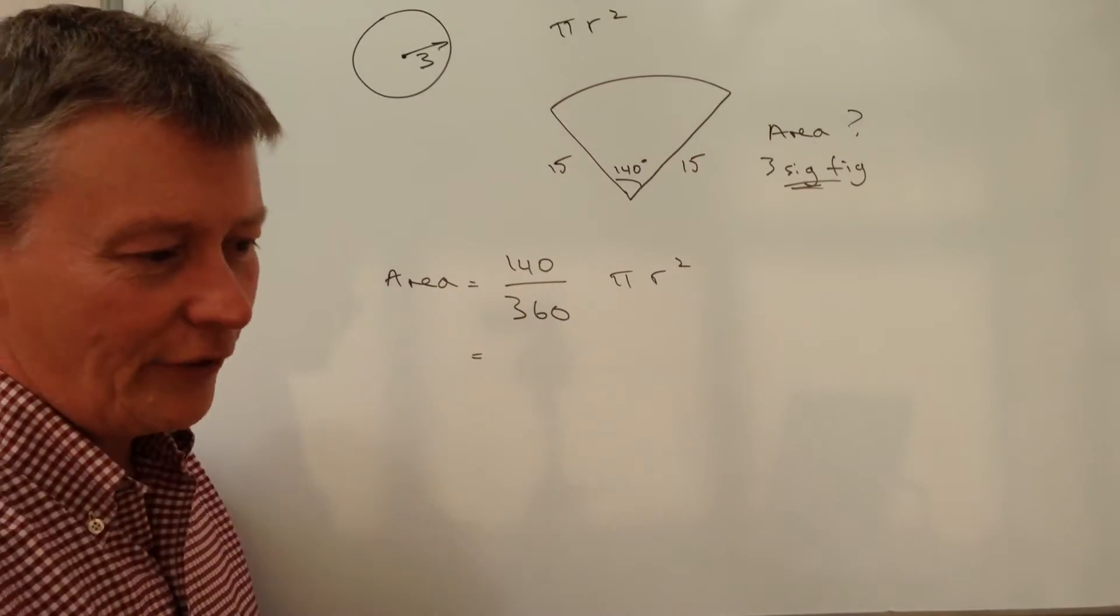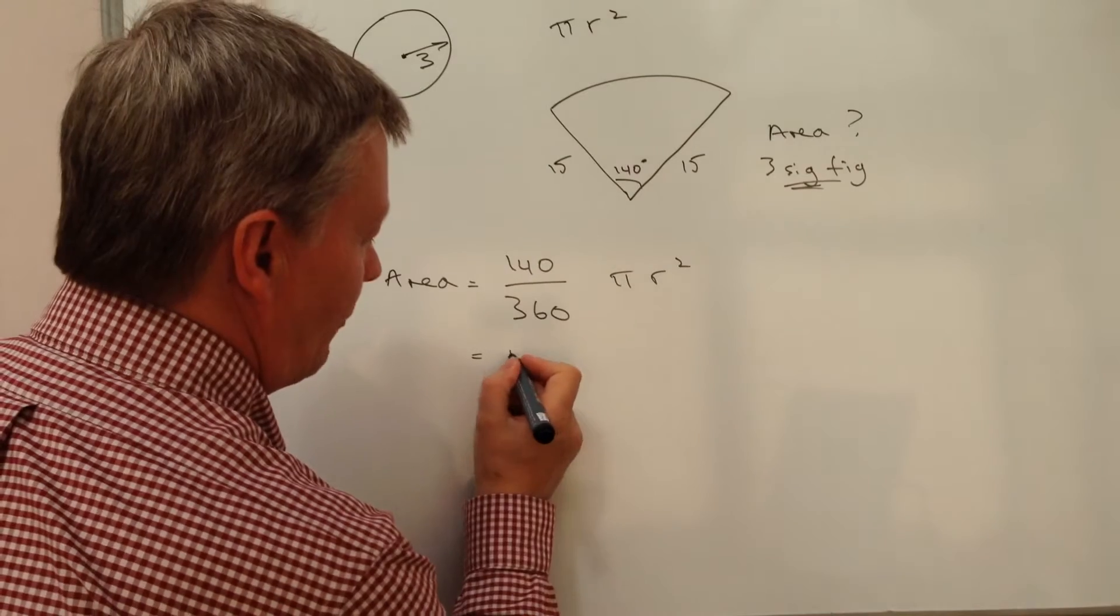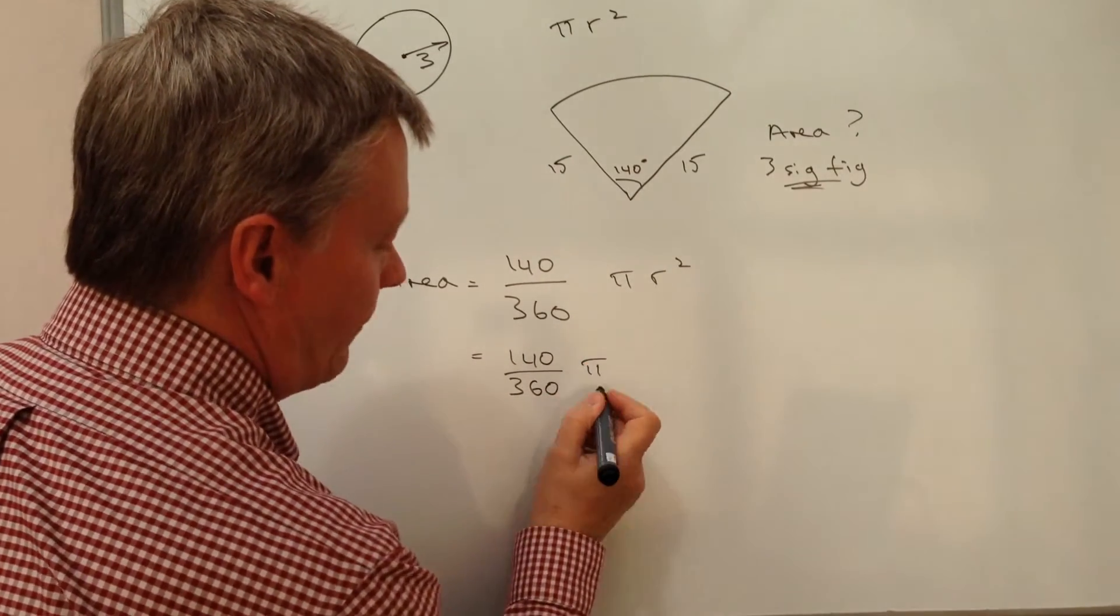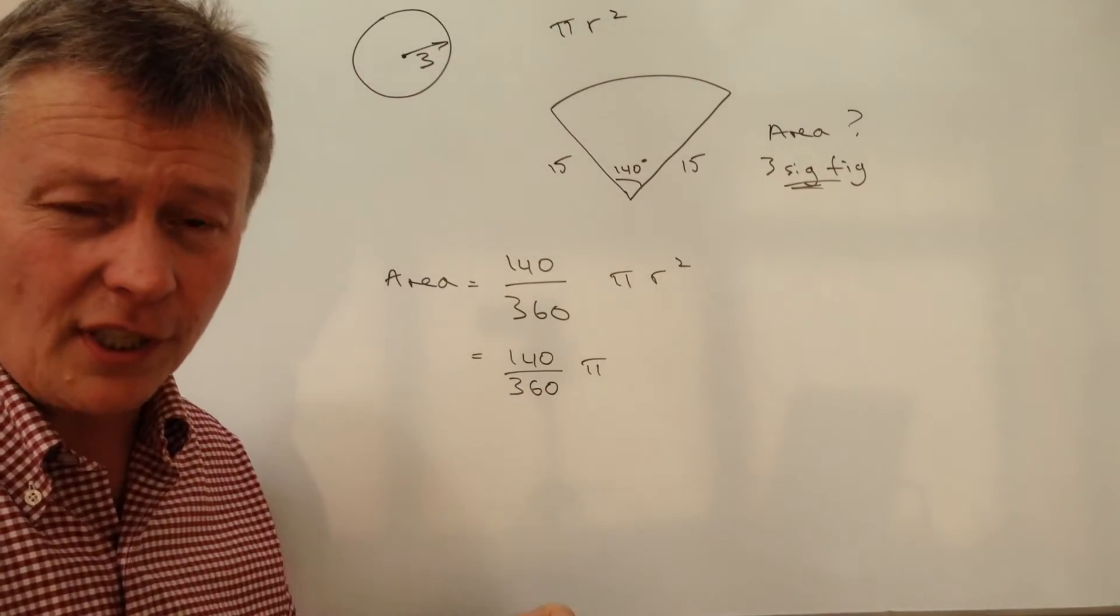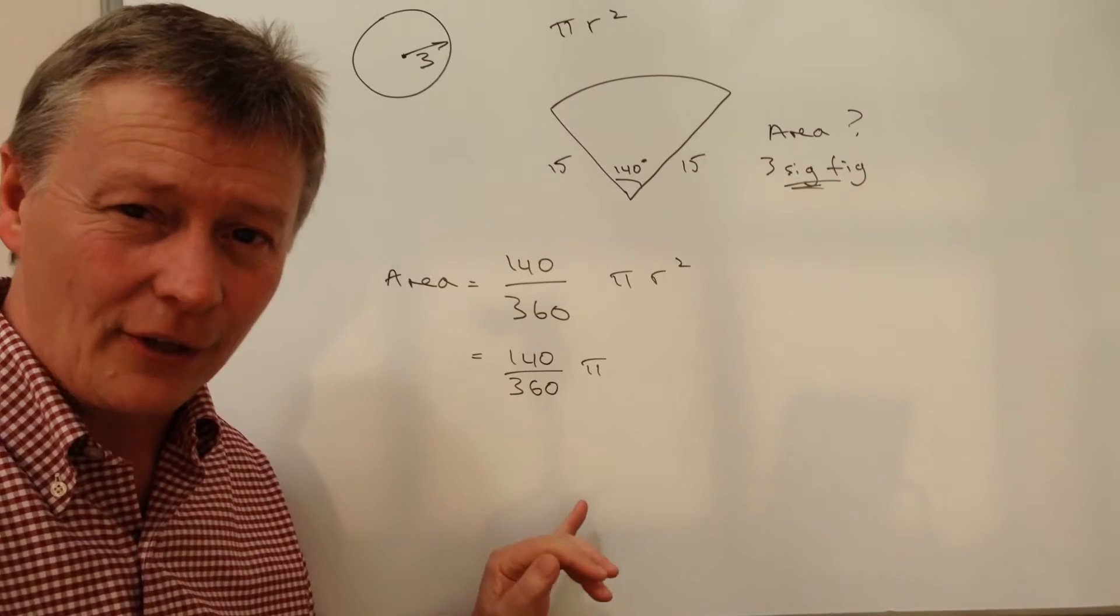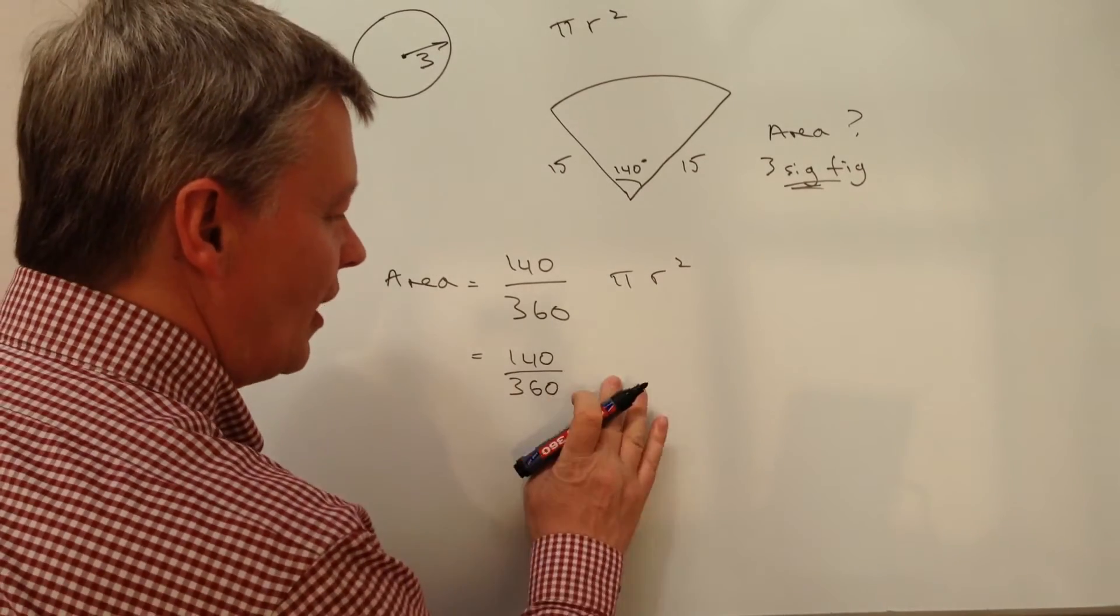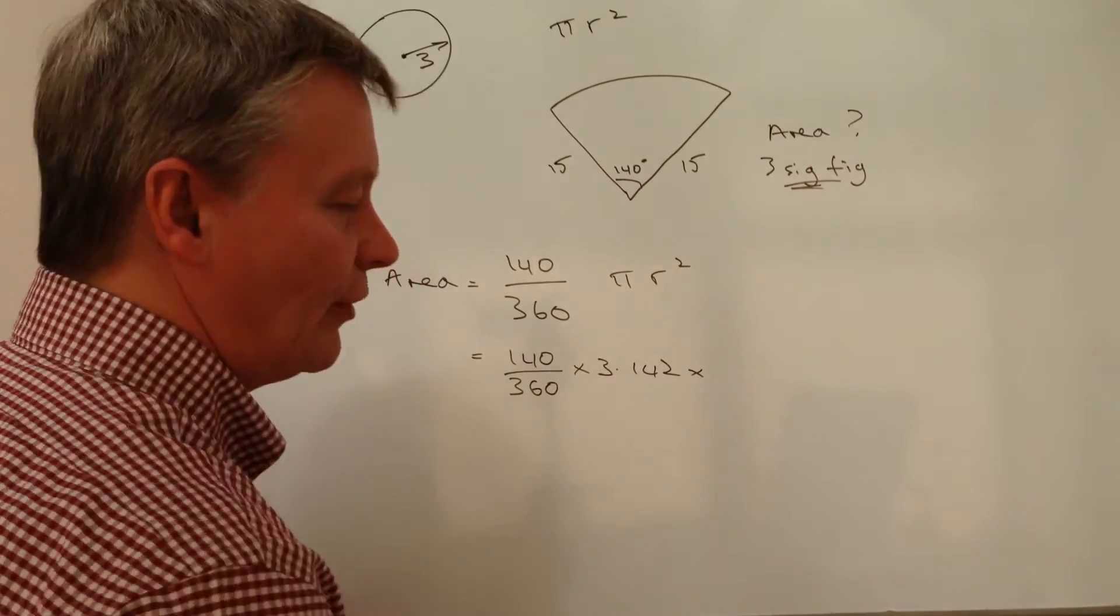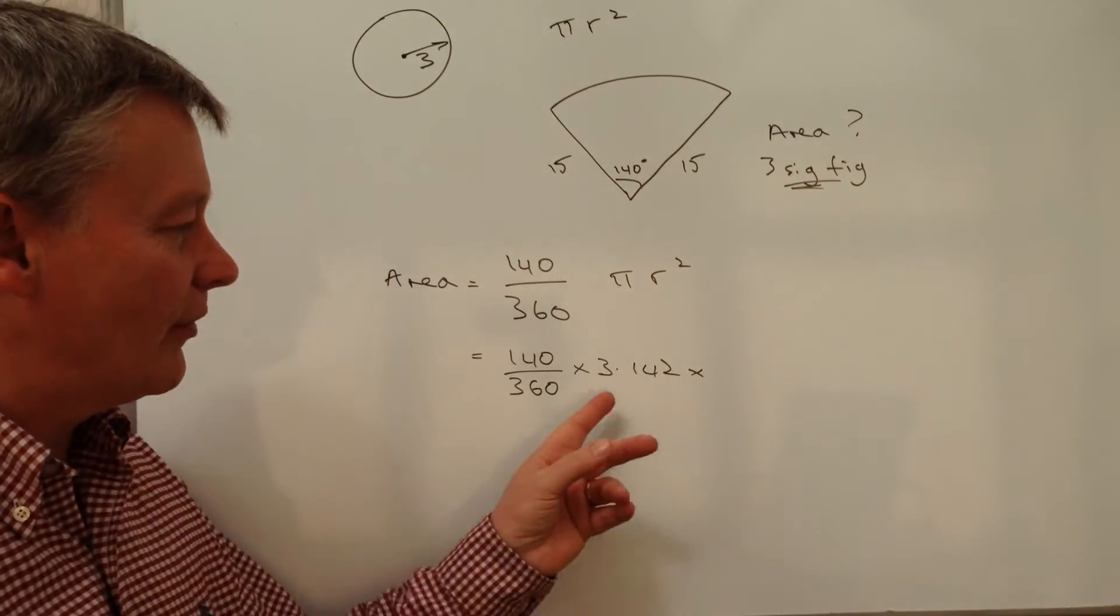So we've got 140 over 360. So I'm going to leave that as it is. And I'm going to put in pi. Now, pi on a calculator usually is pre-programmed, particularly obviously on scientific calculators. But sometimes you might get that given to you as 3.142 or 3.14, something like that.